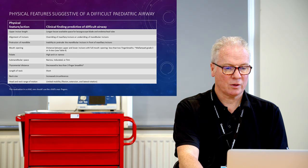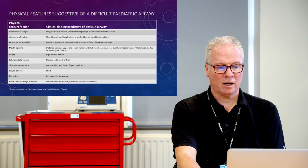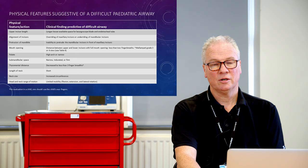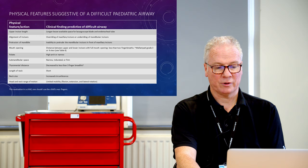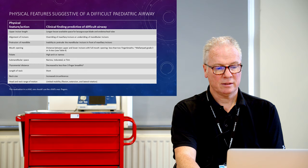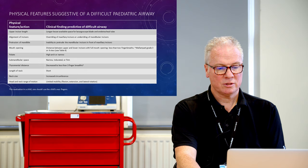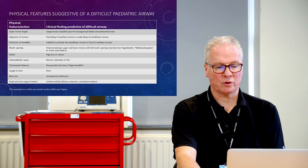The physical features to look for: upper incisor length - a child who has recently got their big teeth but is still not very large themselves, that can be a significant issue. The alignment of the incisors themselves, protrusion of the mandible, mouth opening, the palate if it's high-arched or narrow, submandibular space, and thyreomental distance. Always remember to use the child's own fingers if you're talking about finger breadths.